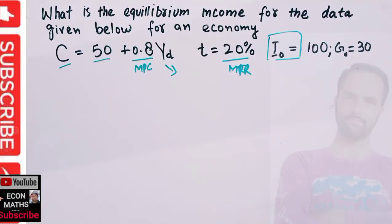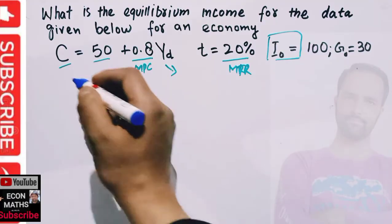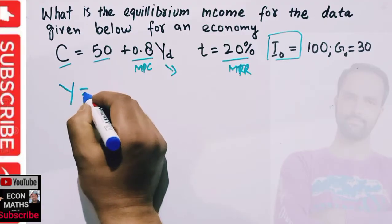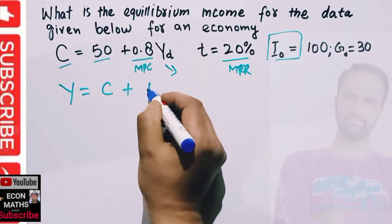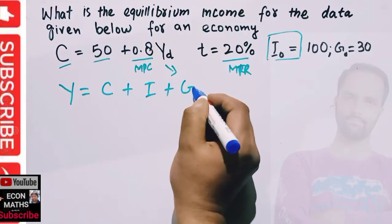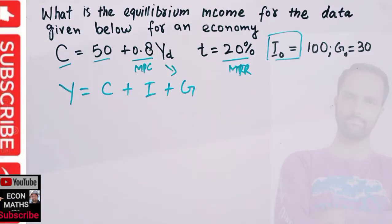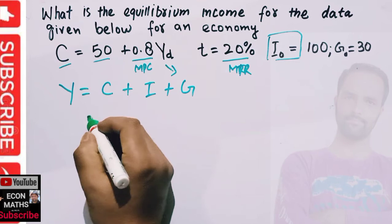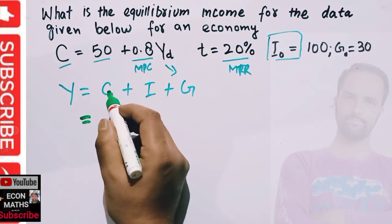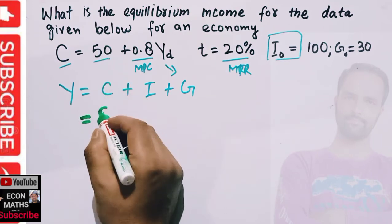Using the income identity Y = C + I + G - this is our income identity - we start by substituting. We have consumption of 50, so we write 50 + 0.8.